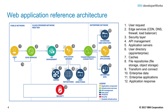Next, edge services provide the capability to access and deliver content and include domain name service or DNS, content delivery networks or CDN, firewalls, and load balancers. Running across the environment, the security layer manages confidentiality, integrity, availability, and compliance as required for the business needs of the web application.